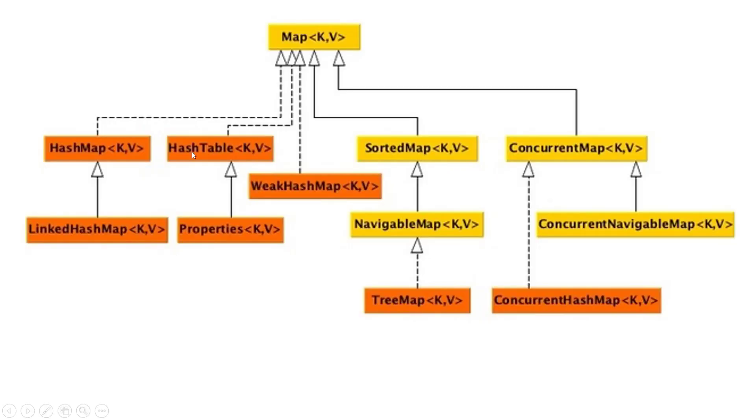So if we see here an overview we can see the map interface and we have different data structures. We've got the hash map key value, hash table, and we have also concurrent map if we need a synchronized thread safe version. Hash table has been deprecated and now Java recommends hash map and also concurrent map.